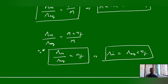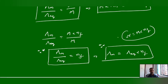Therefore, molar conductance equals equivalent conductance multiplied by n-factor. Note the contrast: normally normality equals molarity times n-factor, but here molar conductance equals equivalent conductance times n-factor. This interrelation between molar conductance and equivalent conductance is very important.